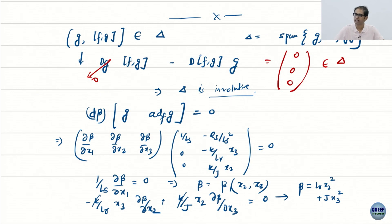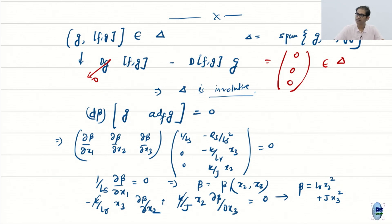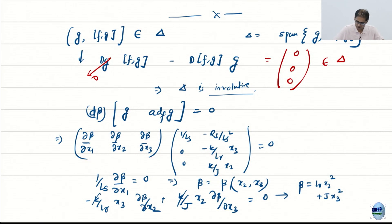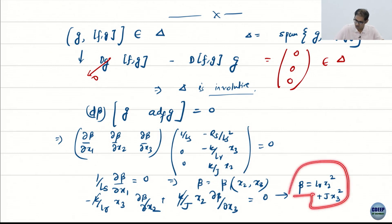Once we had both conditions, we know the system is fully feedback linearizable. Then we use the equality that says dβ, the differential of the output β, when evaluated against the distribution vectors gives exactly 0. This is an evaluation of partial derivatives, giving equations like: partial of β with respect to x₁ is 0 — so no dependence on x₁, only on x₂ and x₃.